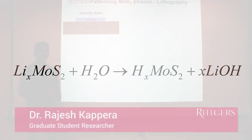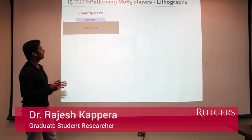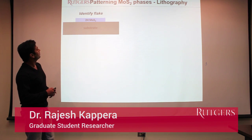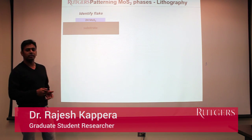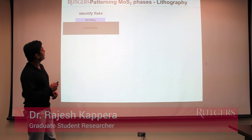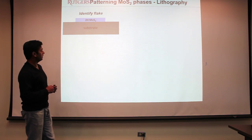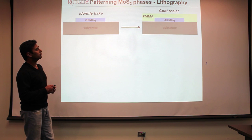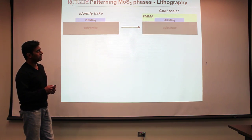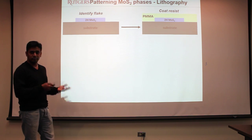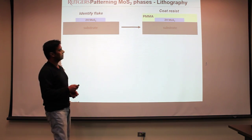Now I'm going to explain how we pattern the 1T phase on the 2H MoS2 flake. The first step is to identify the MoS2 flake on the substrate on which we want to do the patterning. After we identify the flake, we coat it with a resist — specifically an e-beam resist, PMMA — because we're going to do e-beam lithography to pattern the flake.